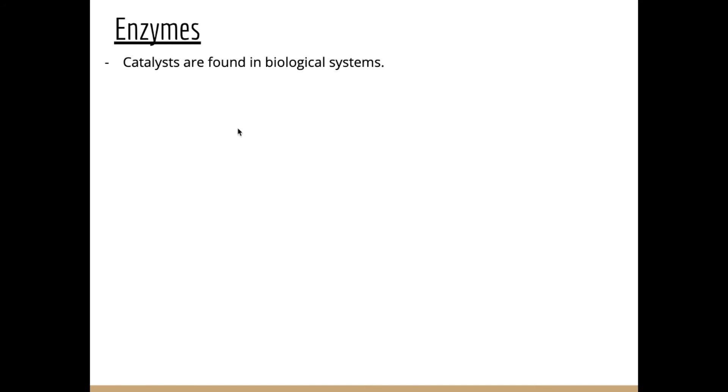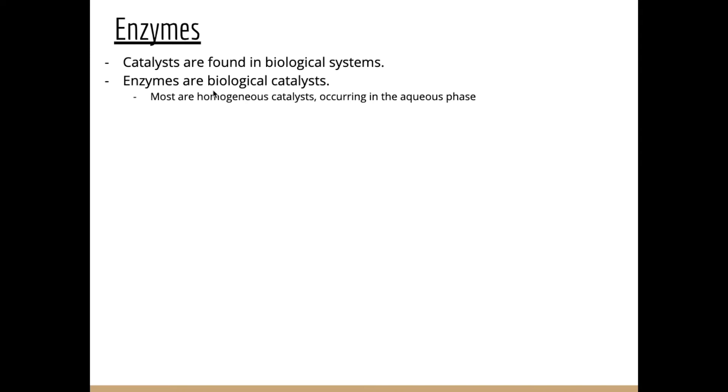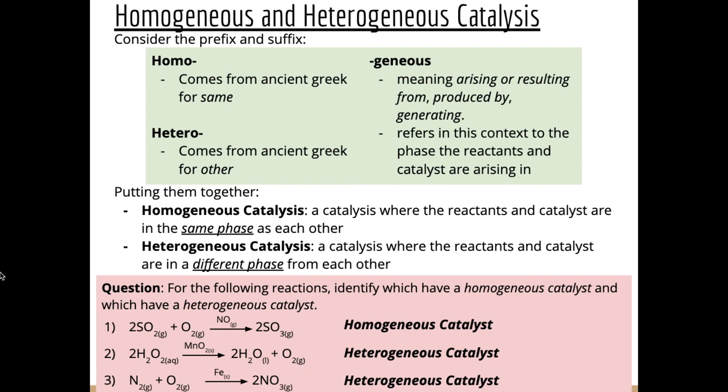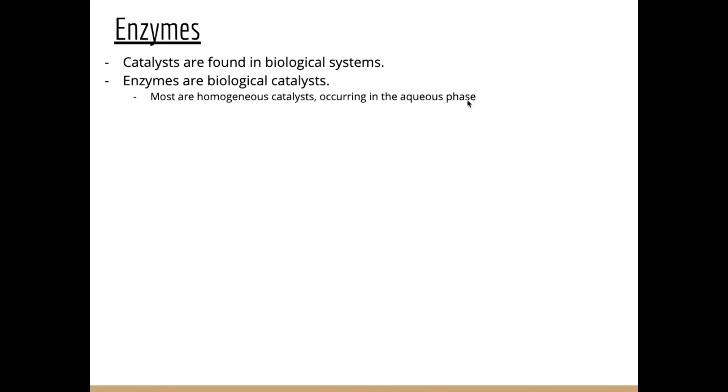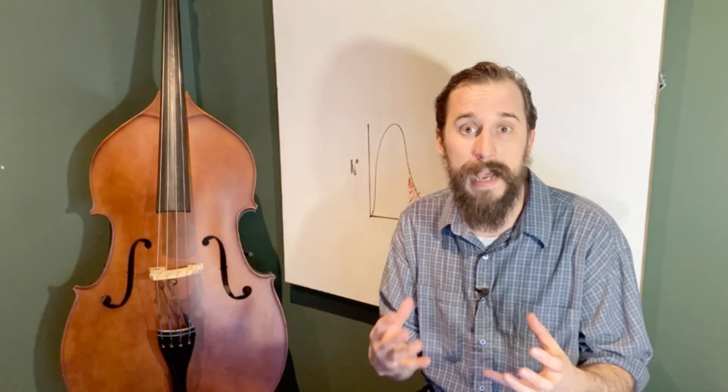To finish this unit, we'll briefly discuss enzymes. Enzymes are catalysts found in biological systems. Within biological systems, all sorts of chemical reactions are constantly occurring to maintain a living organism, and enzymes are catalysts facilitating these biochemical reactions to speed them up. They have unique properties different from inorganic catalysts. Most operate in the aqueous phase. They are very specific — a specific enzyme is pretty much only there for one specific type of reaction — and because they're so specific, they are very efficient, causing reactions to occur very quickly.